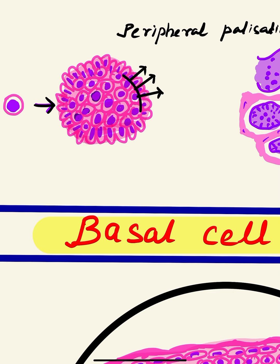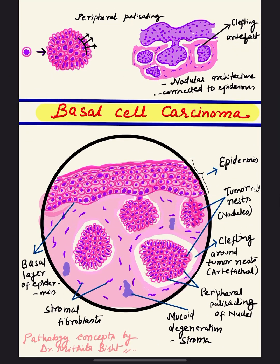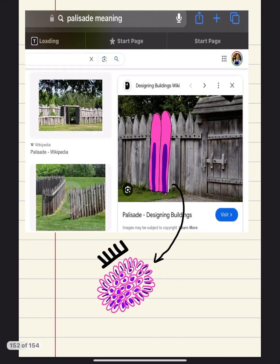The important point about these nests is the presence of peripheral palisading. This means the outermost layer of the tumor cells shows a perpendicular arrangement relative to the tumor nest — this peripheral palisading pattern is characteristic of basal cell carcinoma. It is important to draw the tumor nest with basaloid cells in the center and peripherally palisading nuclei on the outer side.